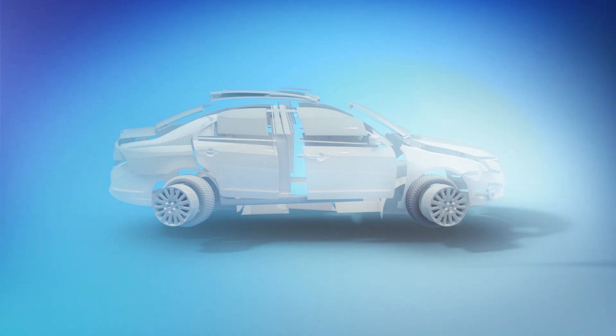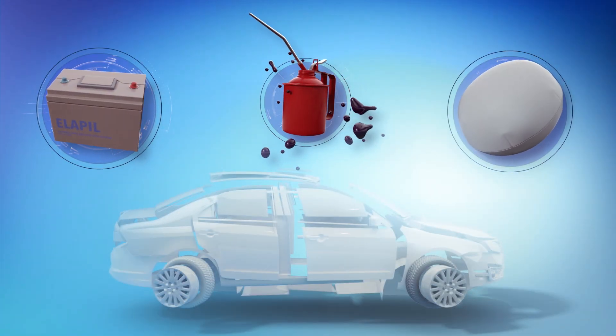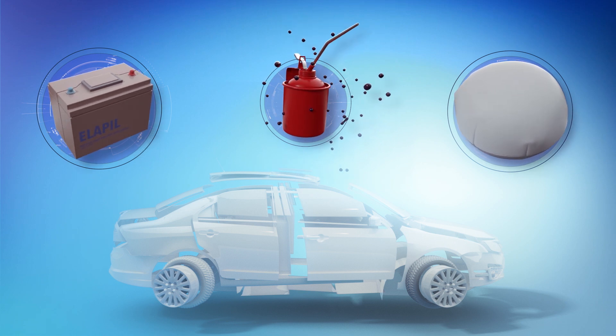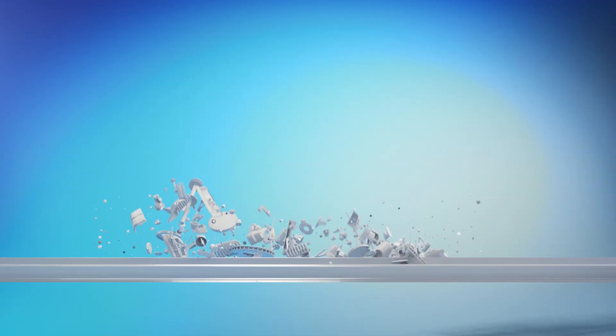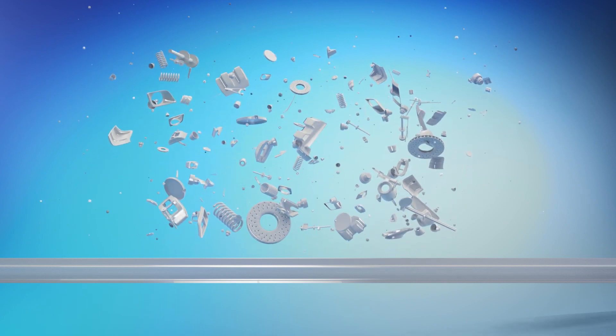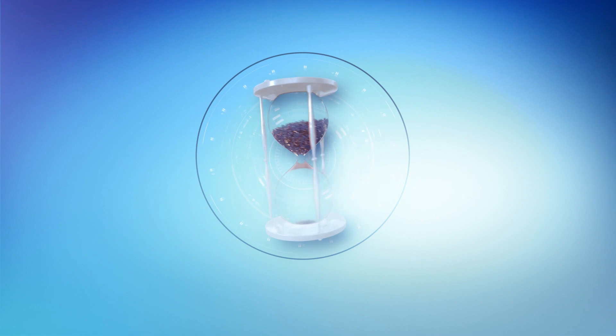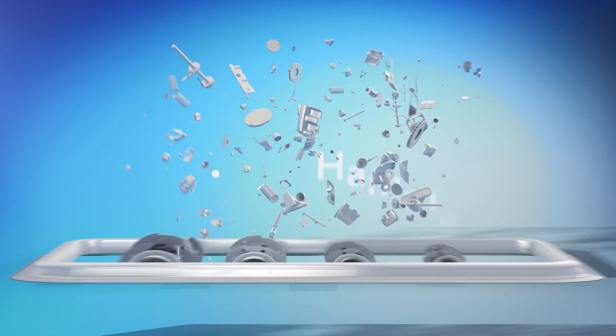When the cars come to us, the environmentally harmful components, such as oil, batteries and hazardous waste, have already been removed by the approved car dismantlers that we work with. A car consists of thousands of parts made from many different materials. Taking them apart by hand would take an incredibly long time.